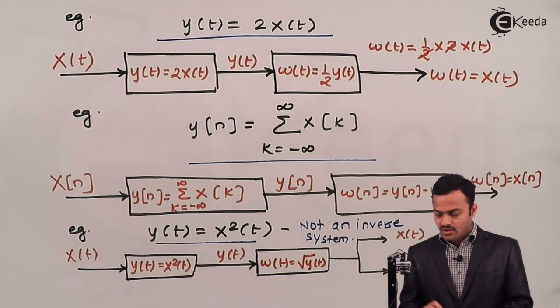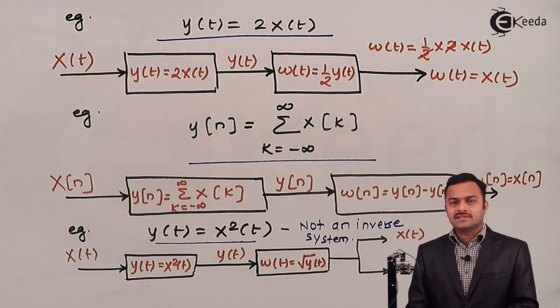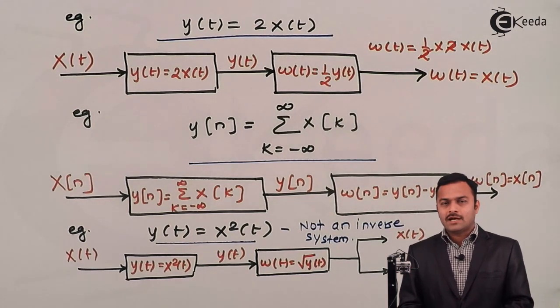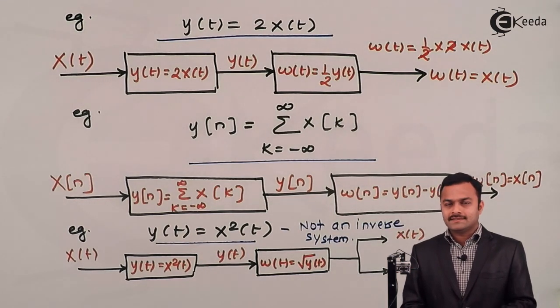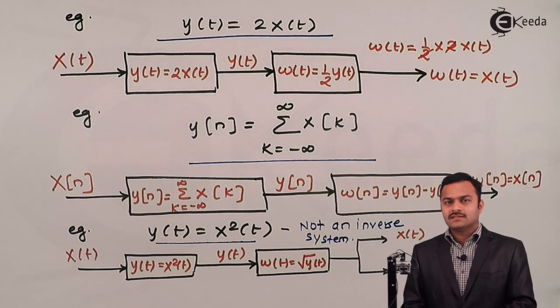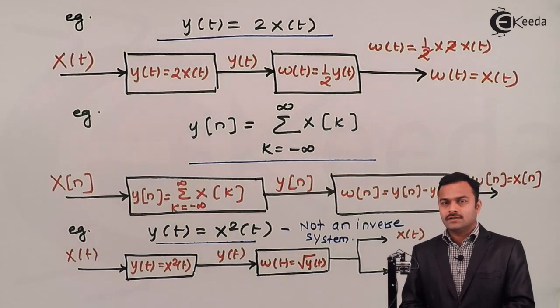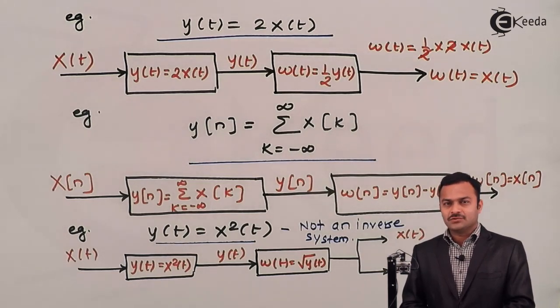So, the definition of an invertible system is that for a distinct input, you should get a distinct output. This is what invertibility and the inverse system mean. Thank you.